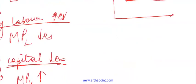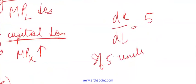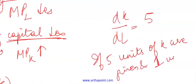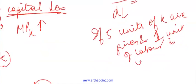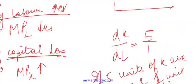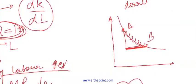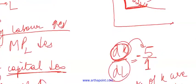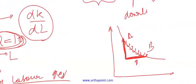So suppose I say that dk by dl is 5. Then I am saying that if 5 units of capital are given and 1 unit of labor is taken instead, then the output produced will be the same. So this is ideally 5 by 1, with a negative sign. So change in capital is by 5 units, which means I am reducing capital by 5 units. Change in labor is by 1 unit, which means I am increasing labor by 1 unit, and this is giving you the same output.